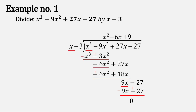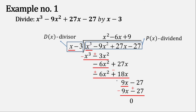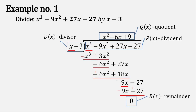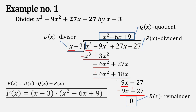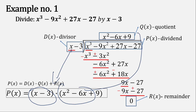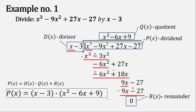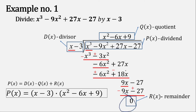Now let's identify the key components. This is the dividend, this is the divisor, this is the quotient, and this is the remainder. Let's write this in division algorithm form. The divisor is x minus 3, and the quotient is x squared minus 6x plus 9. No need to add plus 0 for the remainder since it's just 0. Problems may ask you for the quotient, the remainder, or both, and most of the time they will ask you to write your answer in this form.